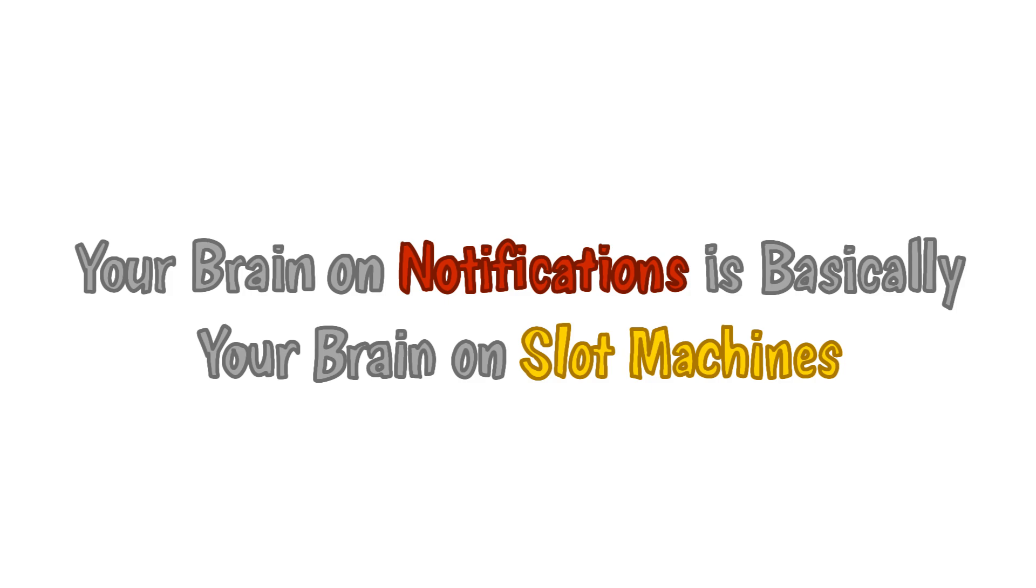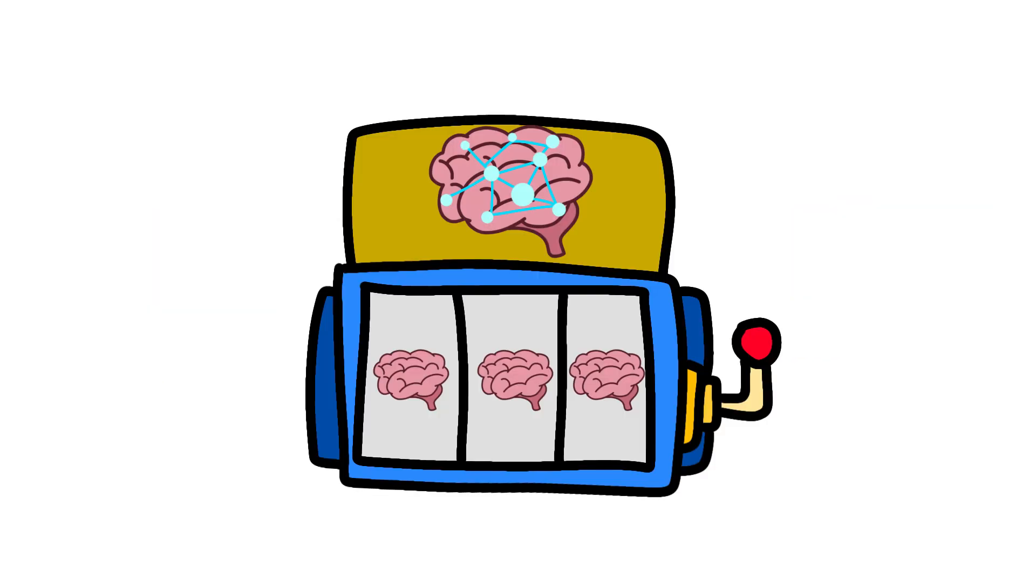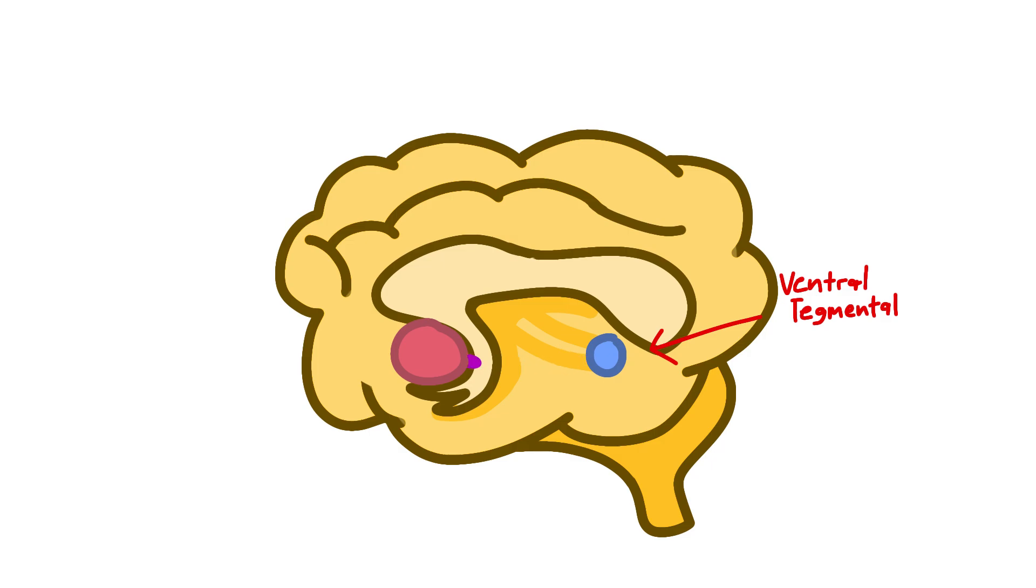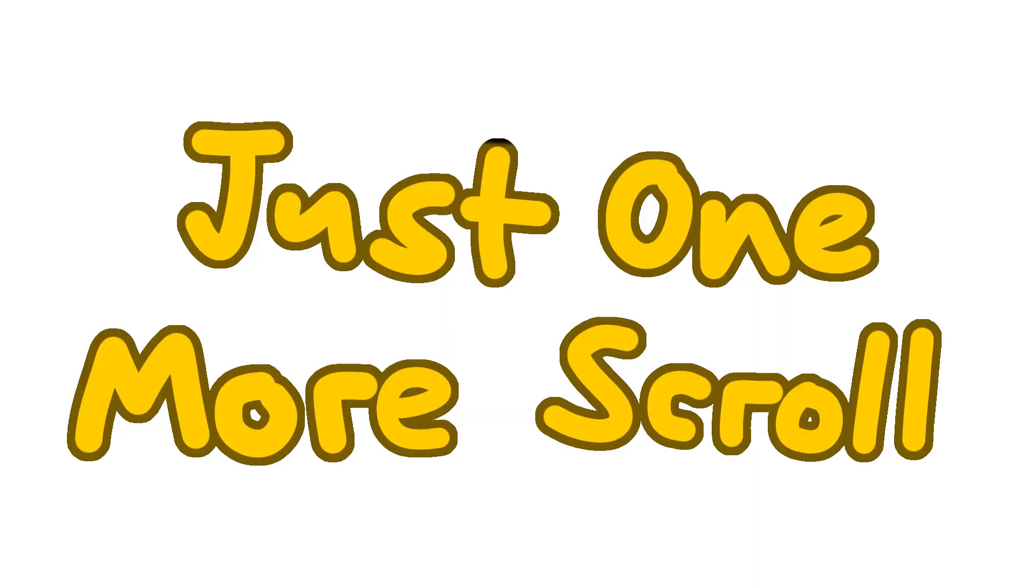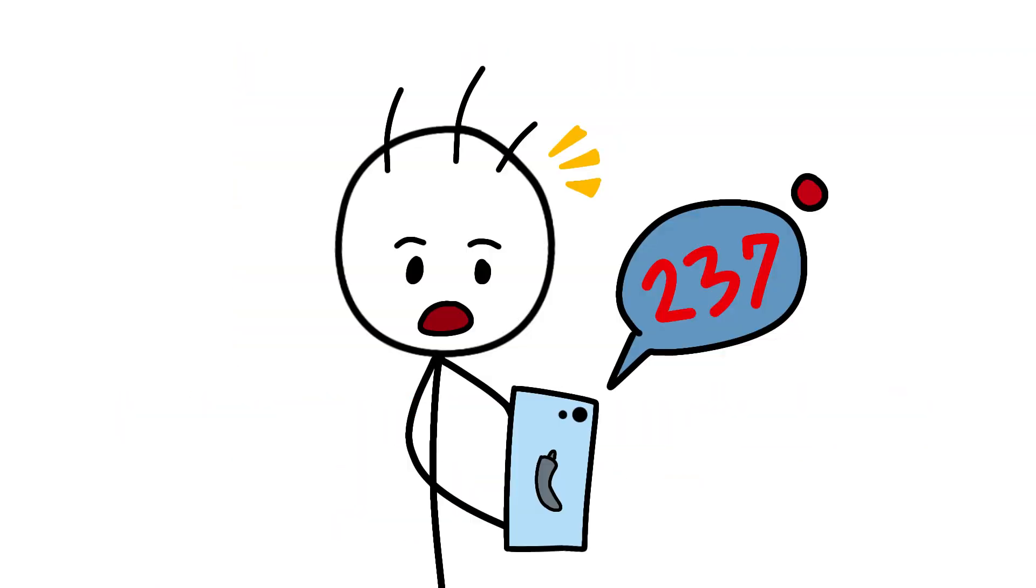Your brain on notifications is basically your brain on slot machines. Every ping, buzz, and red notification bubble triggers the same neural pathway as pulling a slot machine lever. The ventral tegmental area shoots dopamine to the nucleus accumbens faster than you can say, just one more scroll. A 2018 study from the University of Southern California found that teenagers receive an average of 237 notifications per day.